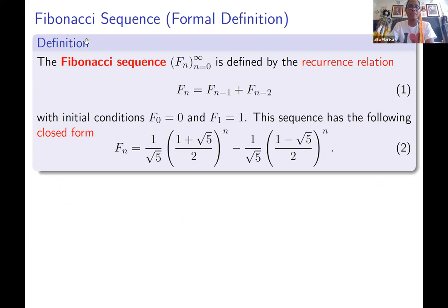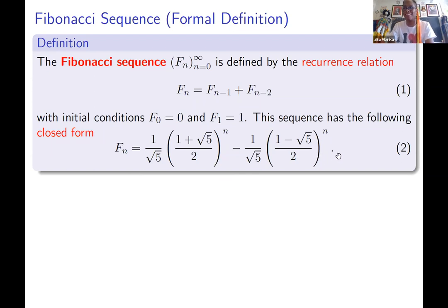Okay, formal definitions. The Fibonacci sequence is defined by the recurrence: the current term is equal to the sum of the previous two terms, and the initial conditions are zero and one. The sequence has the following non-trivial closed form. I say non-trivial because, well, look at it. This is not easy to work with — irrational numbers here, and exponents. But what you should really marvel at is that with all of these irrational numbers floating around, this is an integer for any n value. That's amazing.